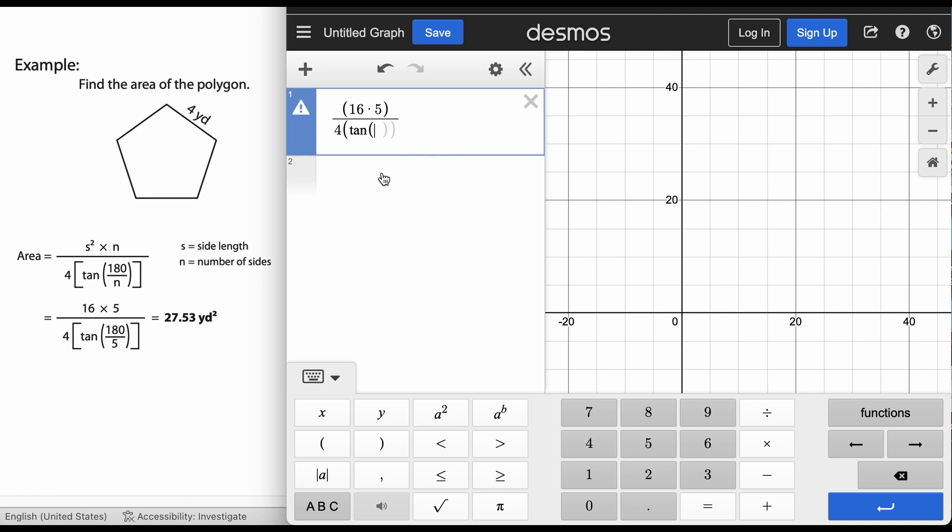I again need a fraction, so but it's only one thing in the numerator, so I'm gonna do 180, hit that divide by button on the keyboard, and then we said number of sides was 5.